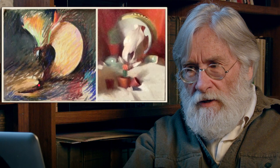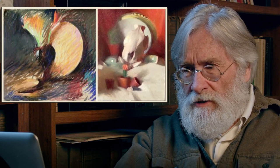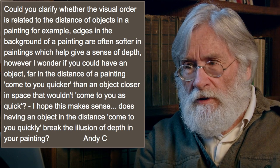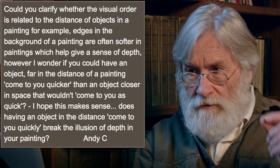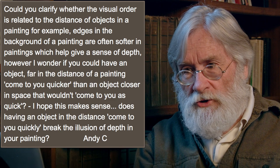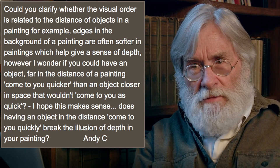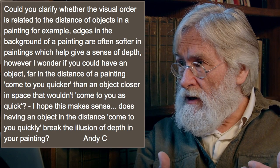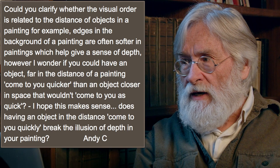That feels way forward in an abstract, visually projective sense. There is a projective order that doesn't necessarily mean literally front or back — this thing is more projective than that. Andy asks: could you clarify whether the visual order is related to the distance of objects in a painting? For example, edges in the background are often softer, giving a sense of depth. But could an object far in the distance come to you quicker than an object closer in space?